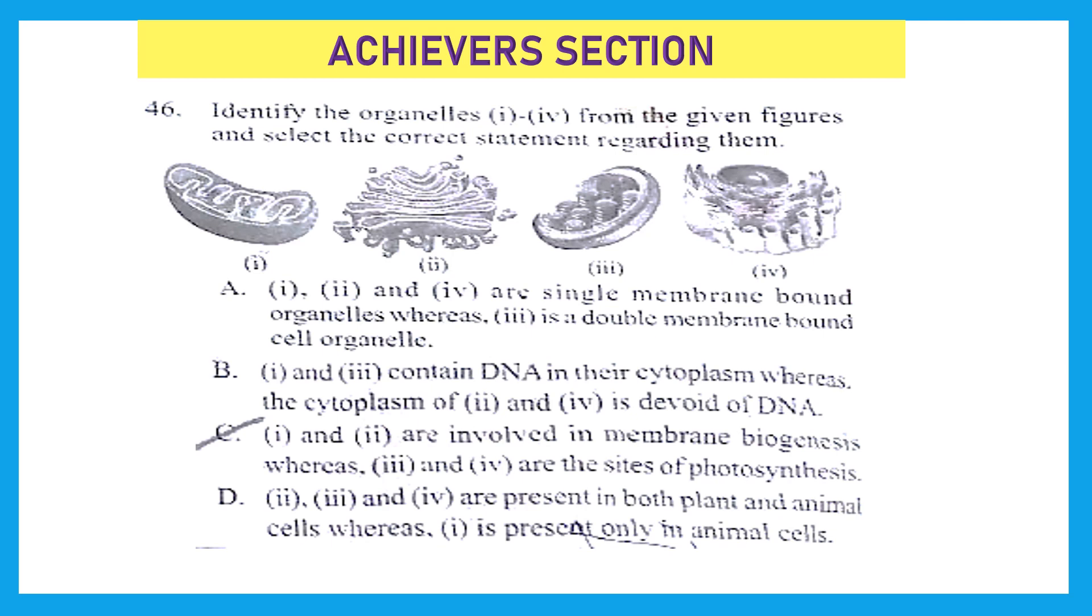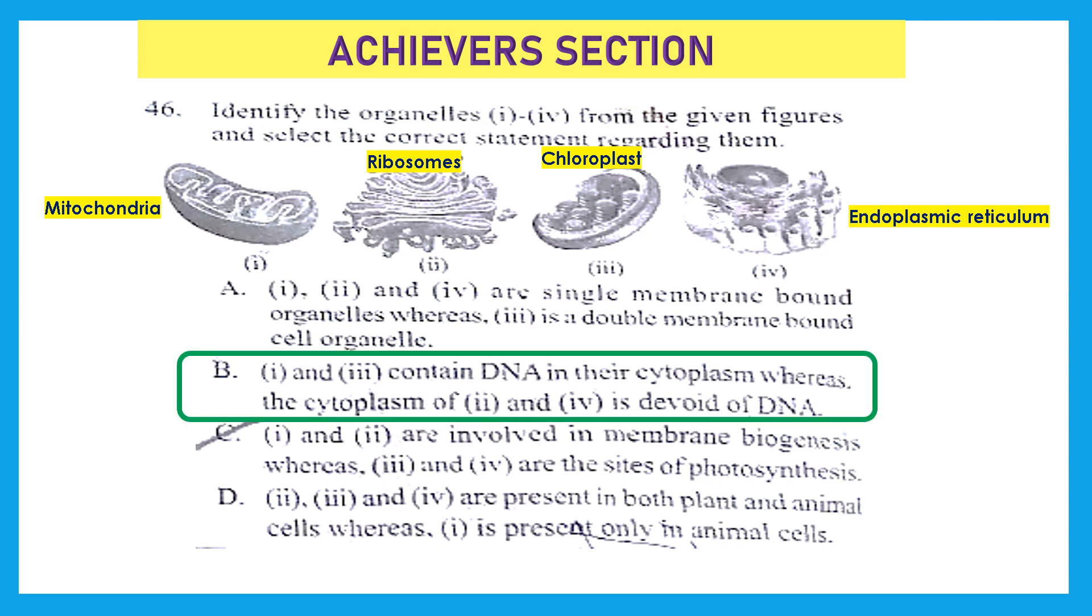Identify the organelles from 1 to 4 from the given figures and select the correct statement regarding them. The first one is mitochondria, second one is ribosomes, third one is chloroplast and fourth one is endoplasmic reticulum. The right answer here is option B, that is 1 and 3 contain DNA in their cytoplasm, whereas the cytoplasm of 2 and 4 is devoid of DNA.